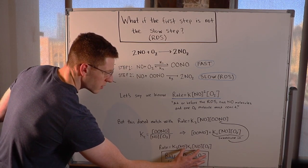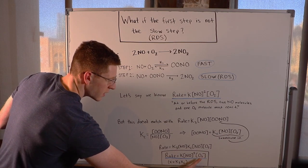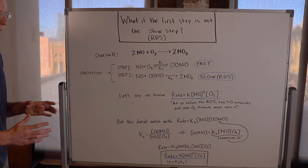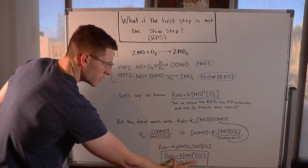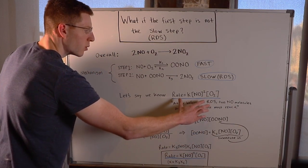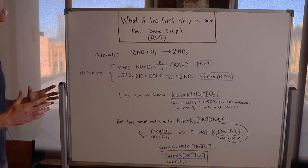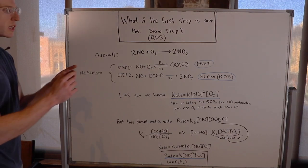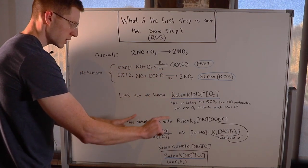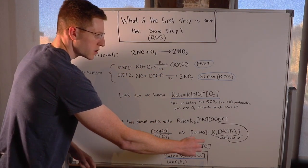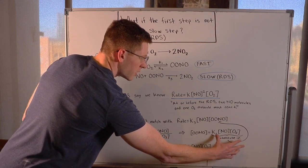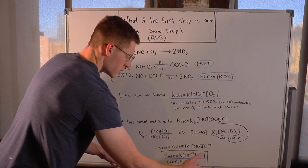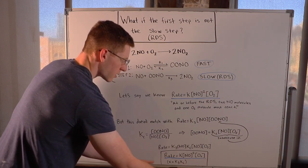And then you notice here we've got NO times NO, so NO squared times the concentration of O2. So now this looks like the known rate law that we know to be true. So this is how you can use an equilibrium step's equilibrium expression to substitute in a term for one of your reactants to obtain the correct rate law.